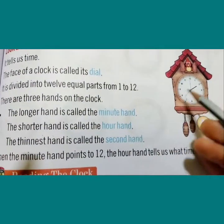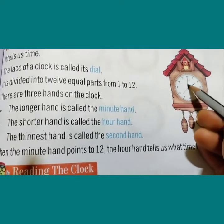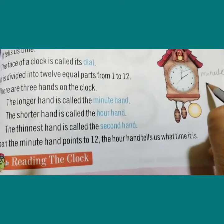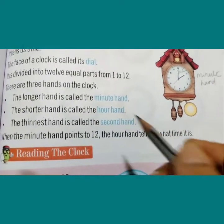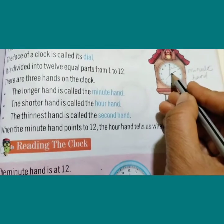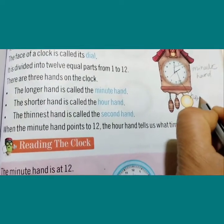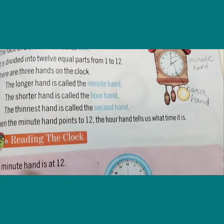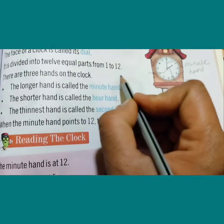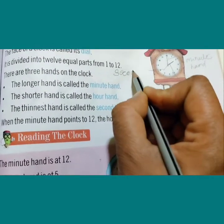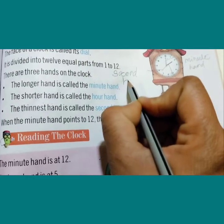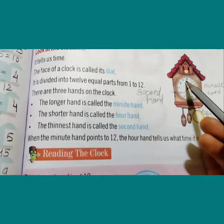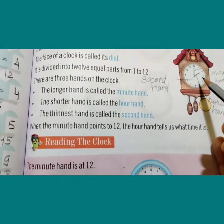The longer hand is called the minute hand — this is the blue hand. There is also the hour hand and the second hand. When the minute hand points to 12, the hour hand tells us what the time is.